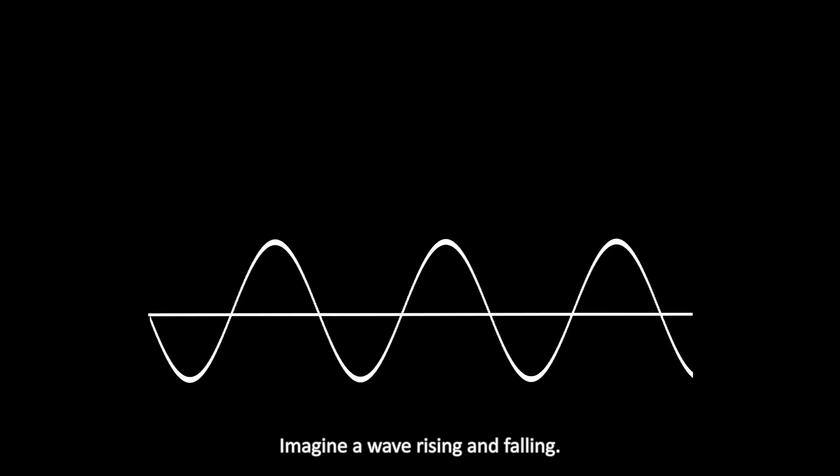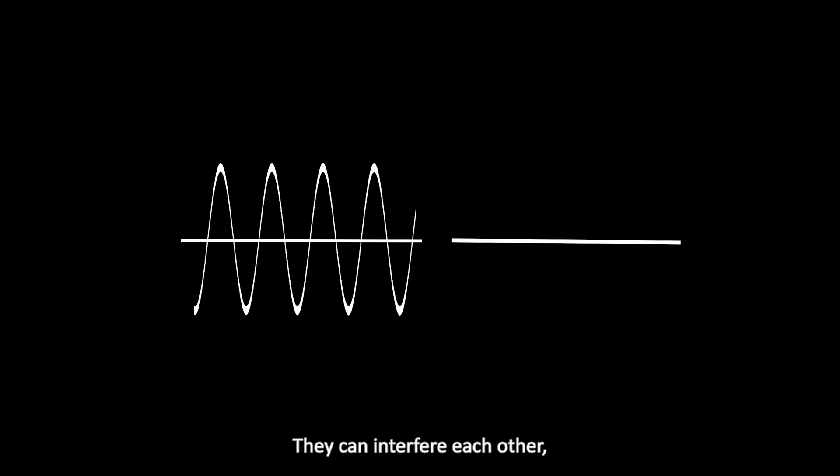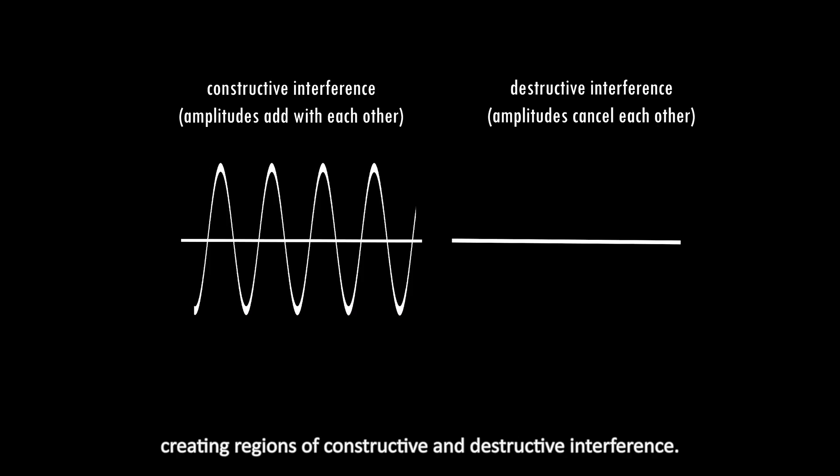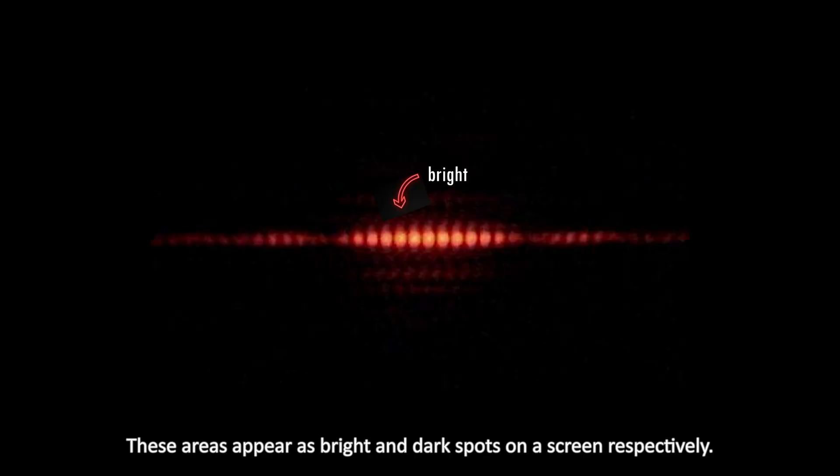Imagine a wave rising and falling. When waves interact, something extraordinary happens. They can interfere with each other, creating regions of constructive and destructive interference. Interference happens when waves overlap and create areas of either reinforcement or cancellation. These areas appear as bright and dark spots on the screen respectively.